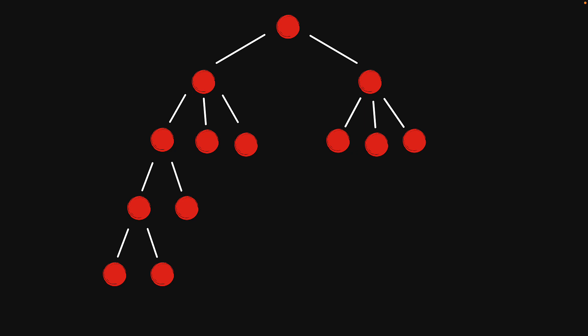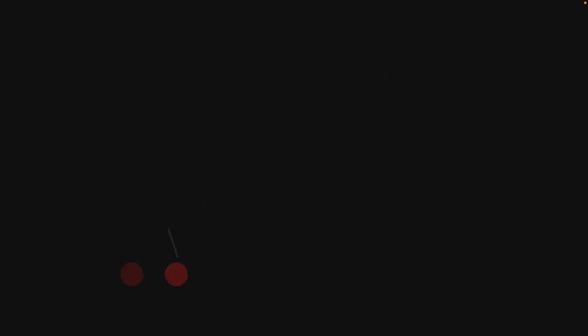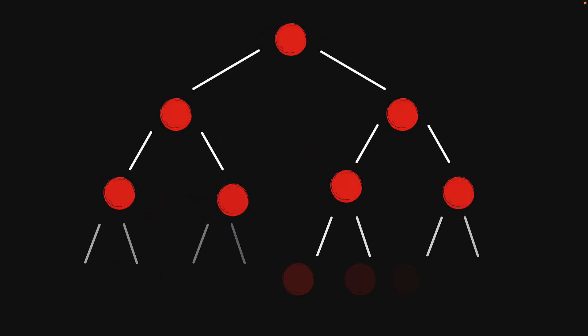The other simplification that we will make is that we will consider only a binary tree. This tree that we have over here is not a binary tree as there are nodes that contain more than two children. In a binary tree, each node has only two children. So here is the reference completely balanced binary tree that we will use to analyze tree data structures.